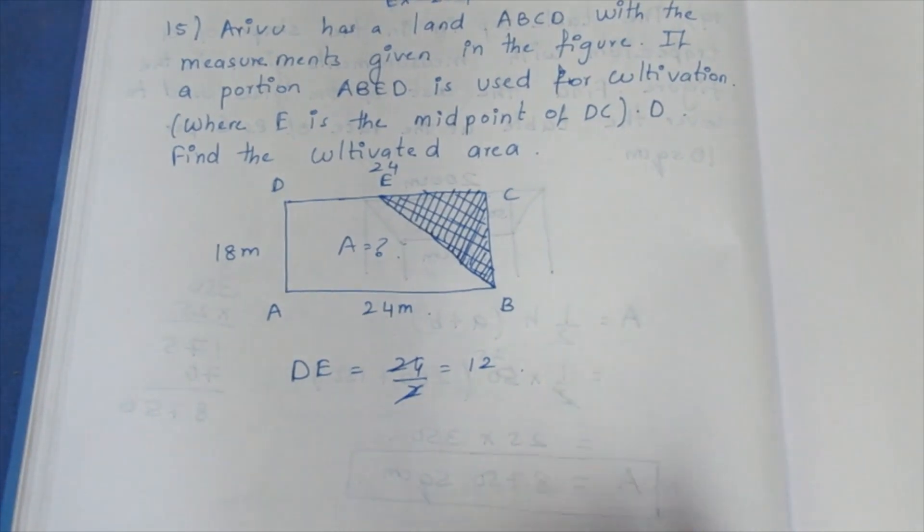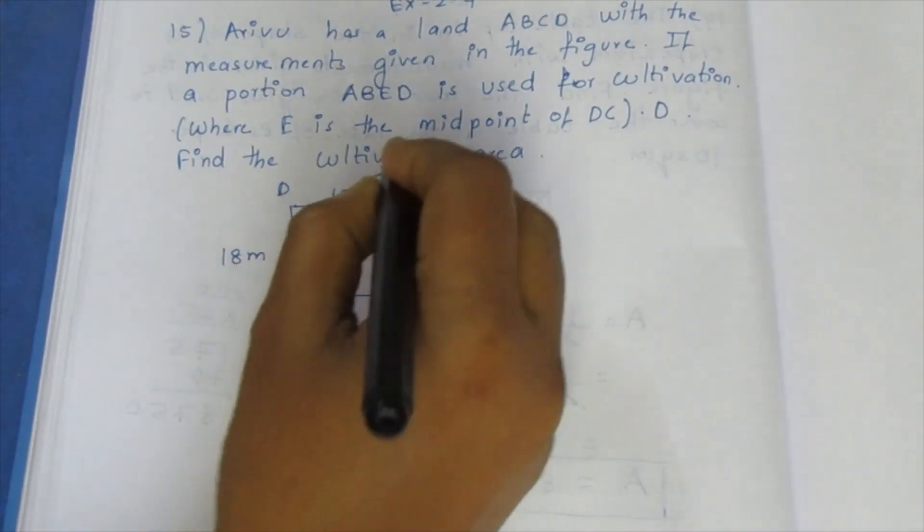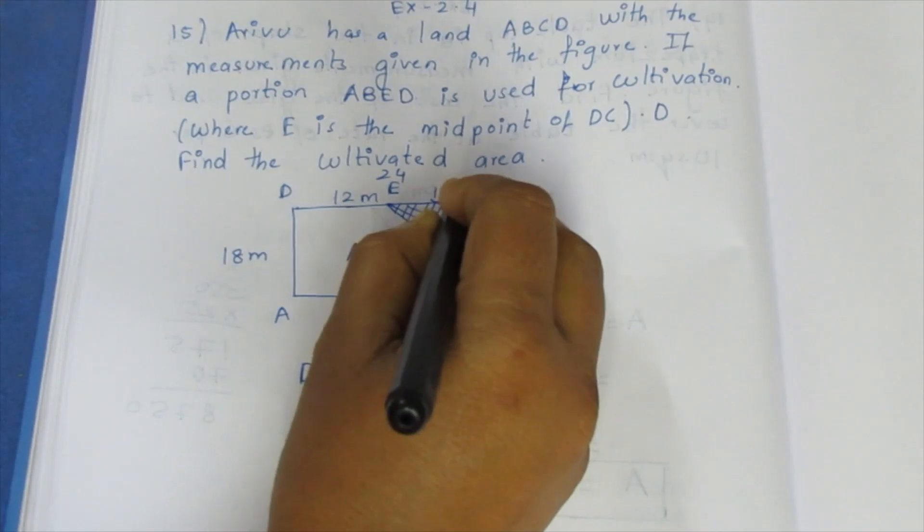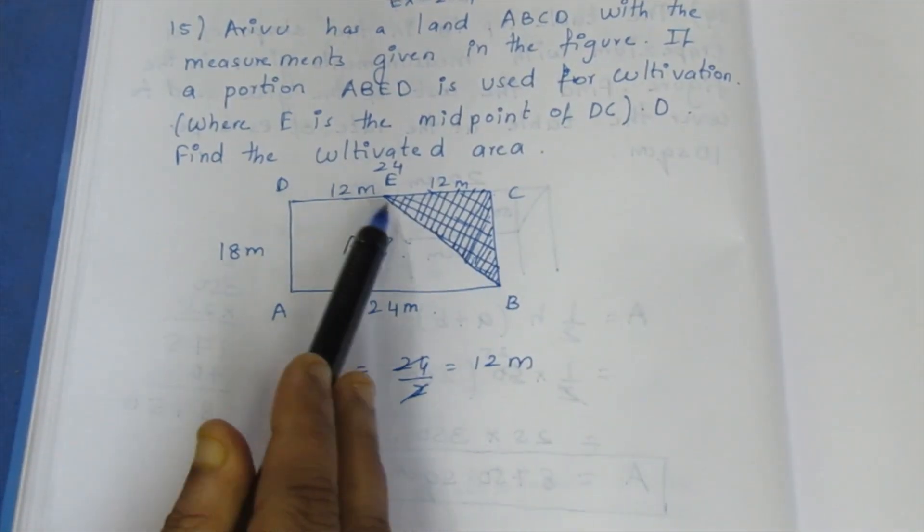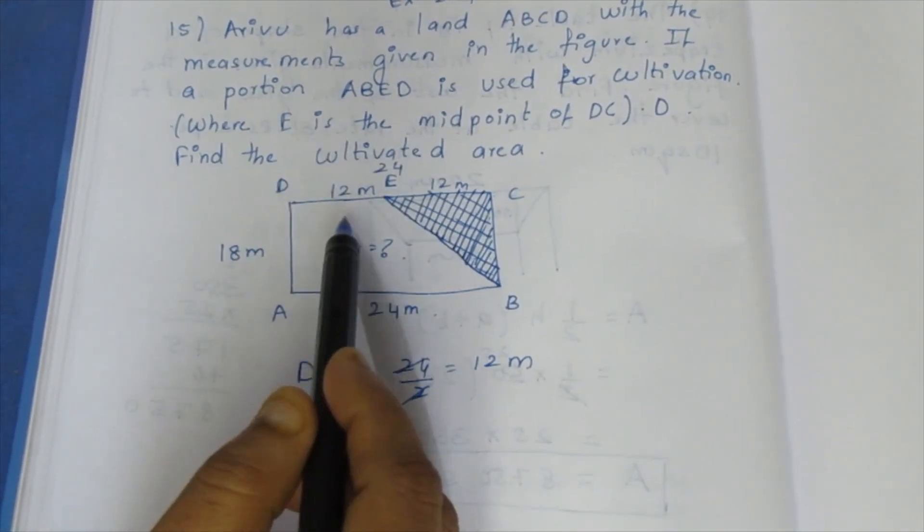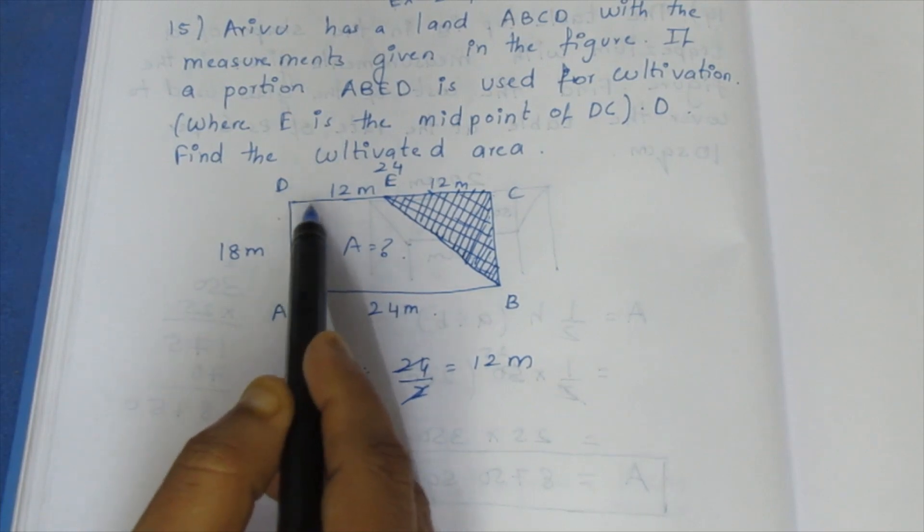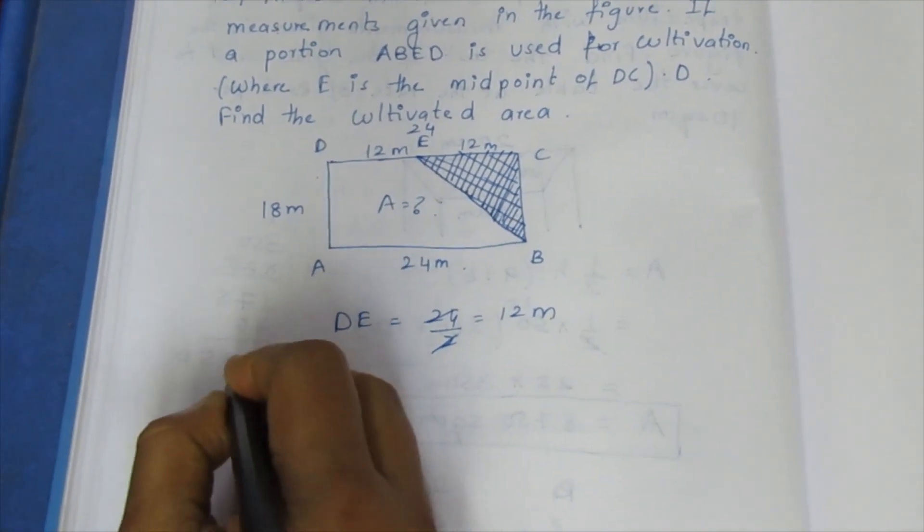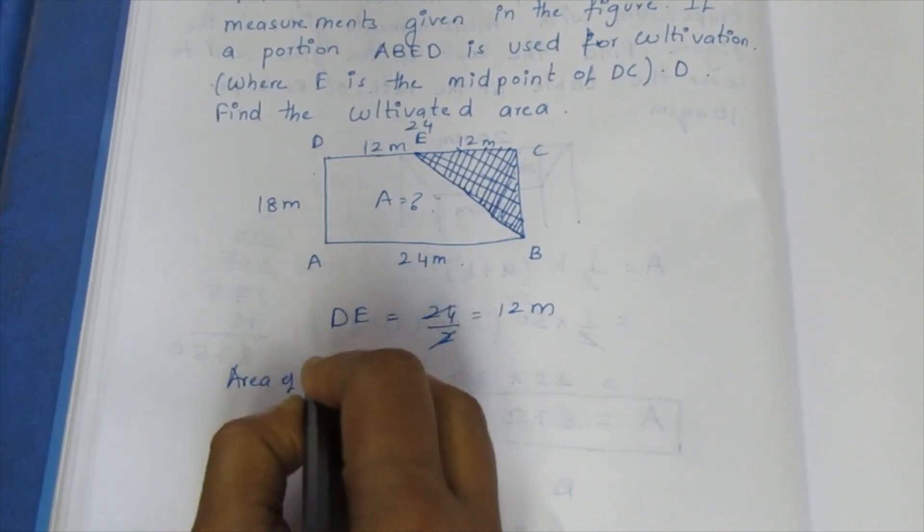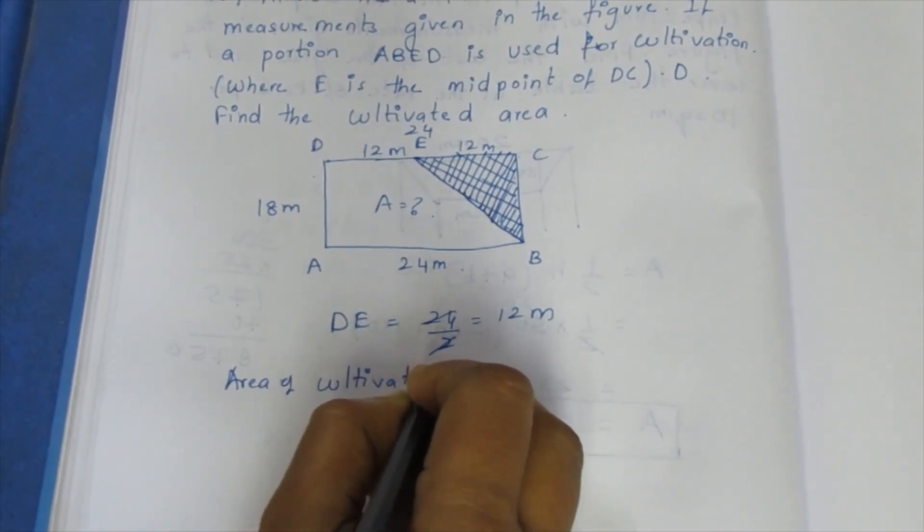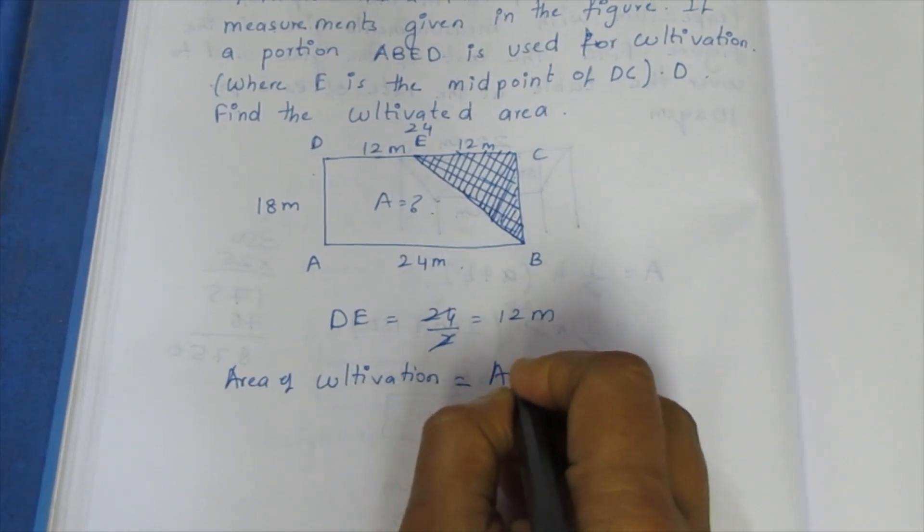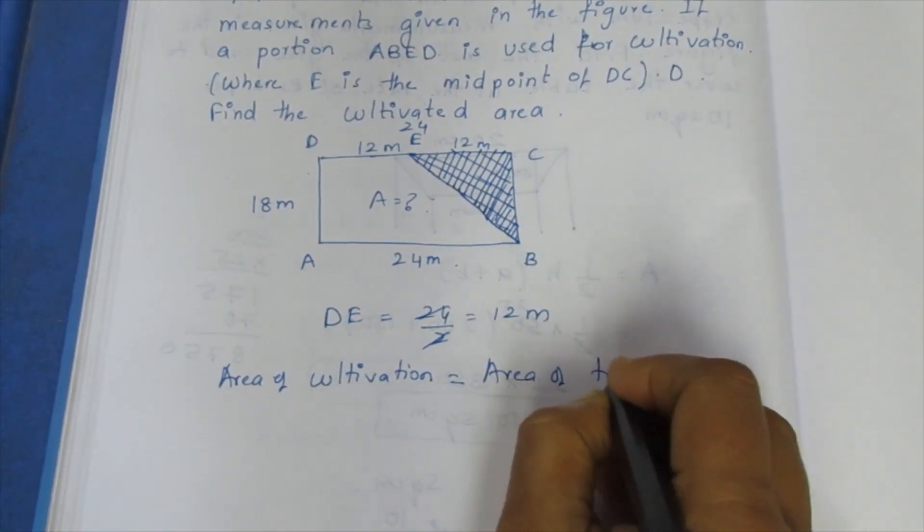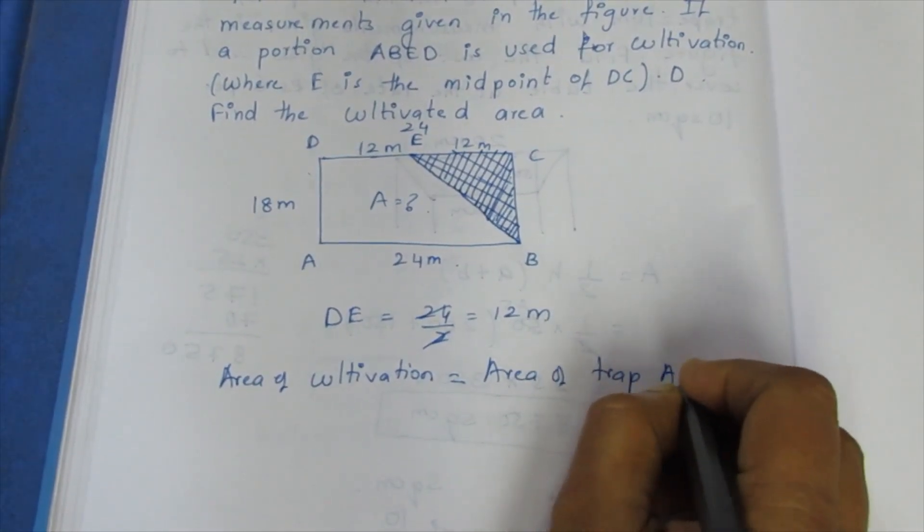So this is the vertical side, 18m. This is the width. Area of the trapezium - cultivation is equal to area of cultivation. Area of trapezium ABED.